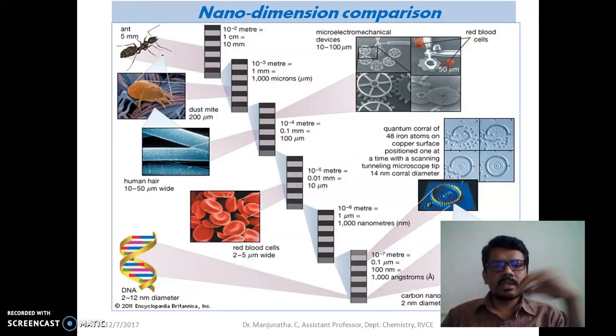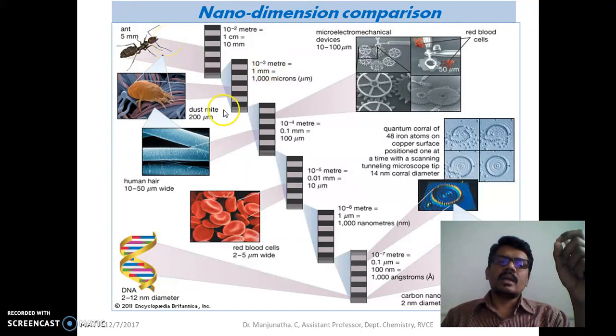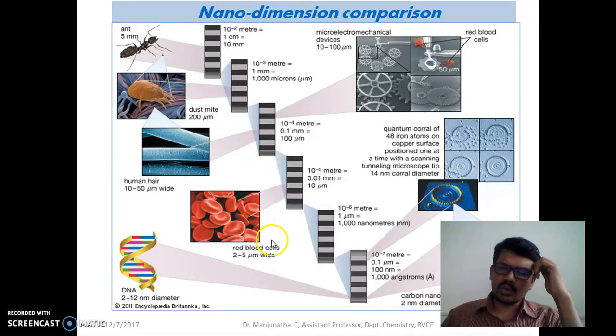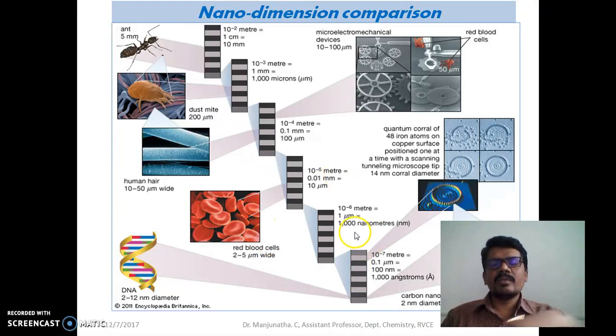You can see this - the size of this is 5 millimeter, and the dust might be around 200 micrometer, or human hair still smaller. Next is our blood cells, red blood cells - it is 2 to 5 micrometer. Then we have DNA, DNA is 2 to 12 nanometer. So DNA, blood cells - nanometers is coming after blood cells.